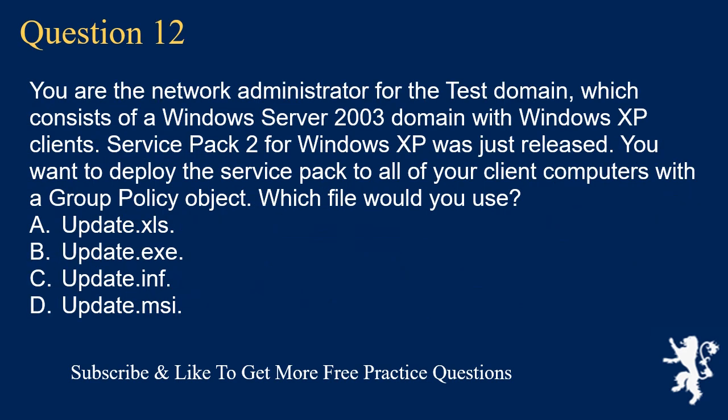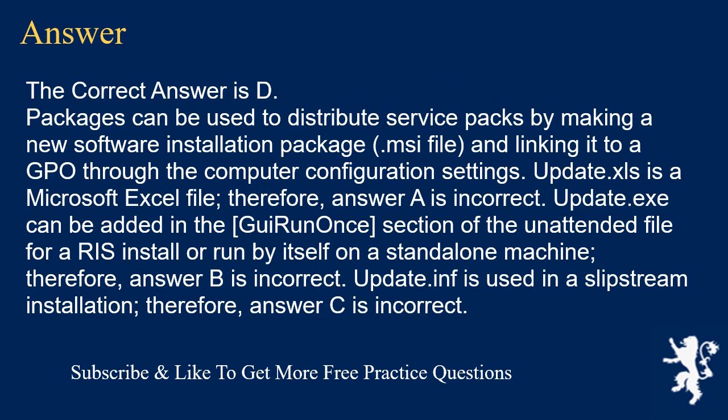Question 12. You are the network administrator for the test domain, which consists of a Windows Server 2003 domain with Windows XP clients. Service Pack 2 for Windows XP was just released. You want to deploy the service pack to all of your client computers with a group policy object. Which file would you use? A. Update.xls. B. Update.exe. C. Update.inf. D. Update.msi. The correct answer is D. Packages can be used to distribute service packs by making a new software installation package (.msi file) and linking it to a GPO through the computer configuration settings. Update.xls is a Microsoft Excel file, so answer A is incorrect. Update.exe can be added in the GUI run once section of the unattended file for a RIS install, so answer B is incorrect. Update.inf is used in a slipstream installation, so answer C is incorrect.